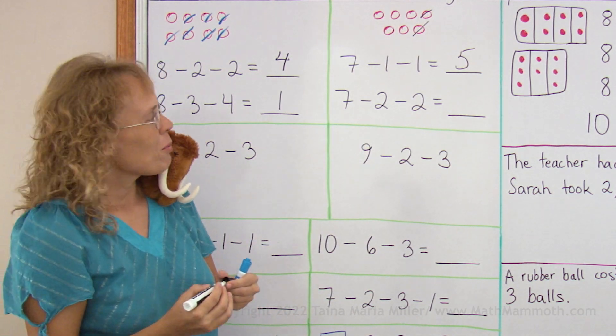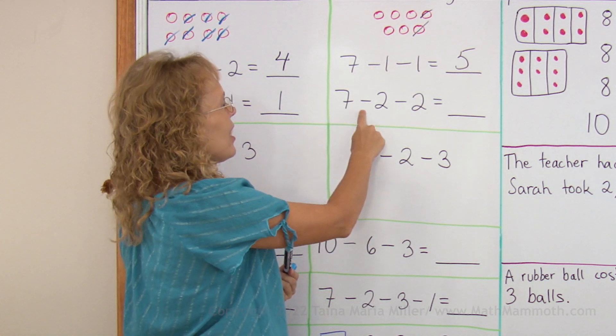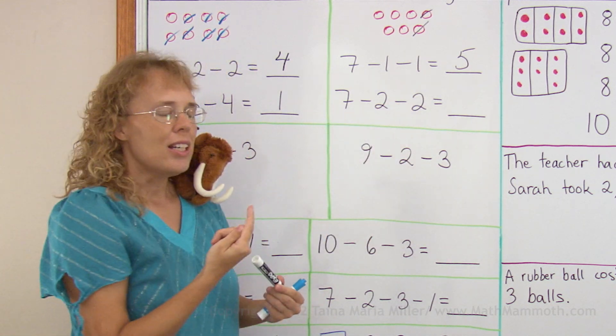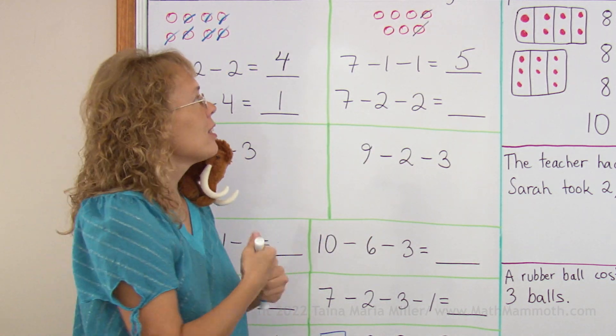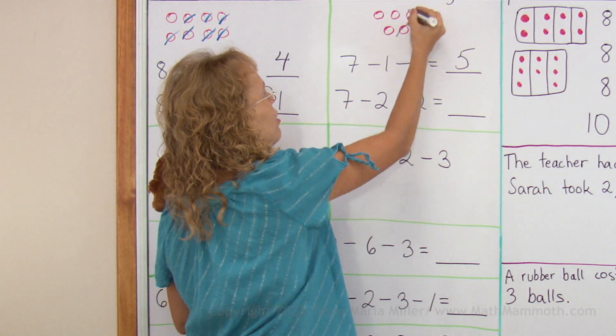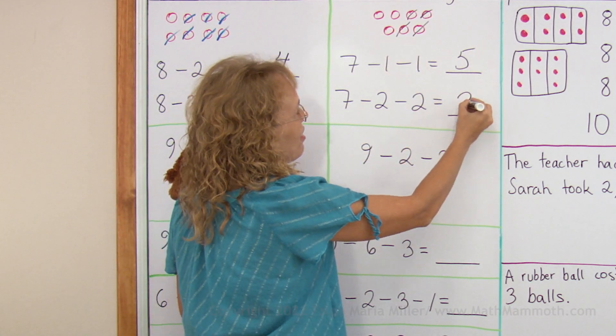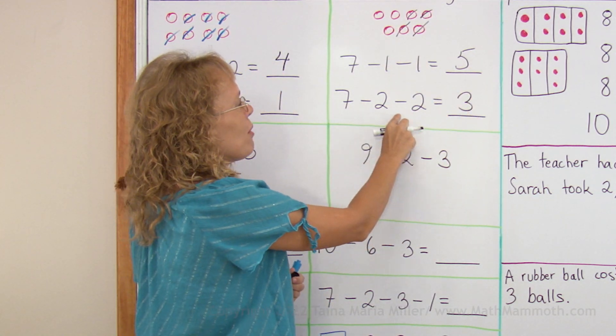Another example, we have 7 and then take away 2, take away 2. So in total we are taking away 4: 1, 2, 3, 4. And so 3 are left. It's like 7, take away 4.